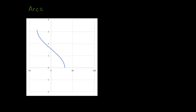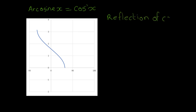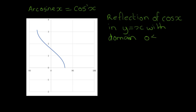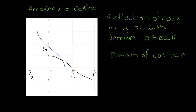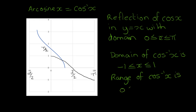Similarly, arc cosine is cos to the minus 1 x. The graph of arc cos is a reflection of the cos graph in y equals x, with the domain restricted between 0 and pi. Let me draw in cos x. So the domain of cos to the minus 1 x, or arc cos, is minus 1 to 1, and the range of arc cos goes from 0 to pi.